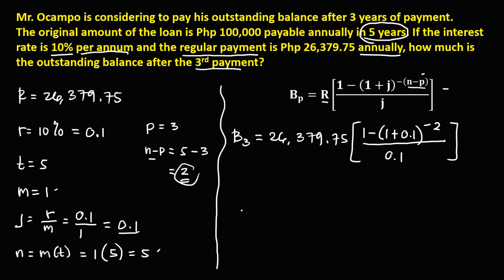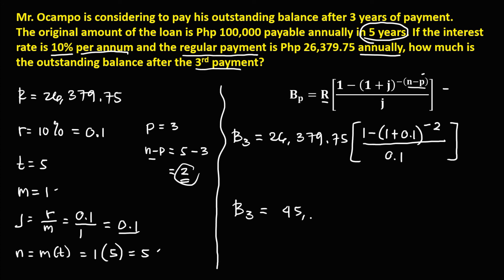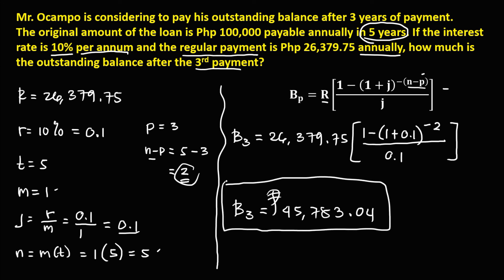To compute the outstanding balance after the 3rd payment: we have 1 minus 1.1 to the power of negative 2, then divide by 0.1, then multiply by the regular payment 26,379.75. This gives us the outstanding balance after the 3rd payment, which equals 45,783.04 pesos.